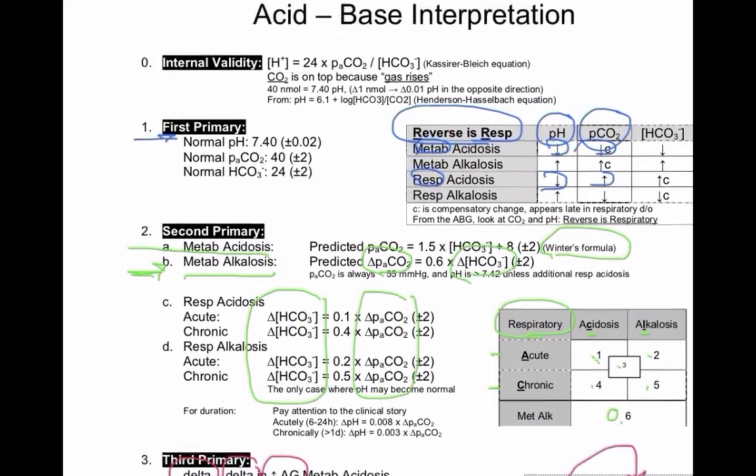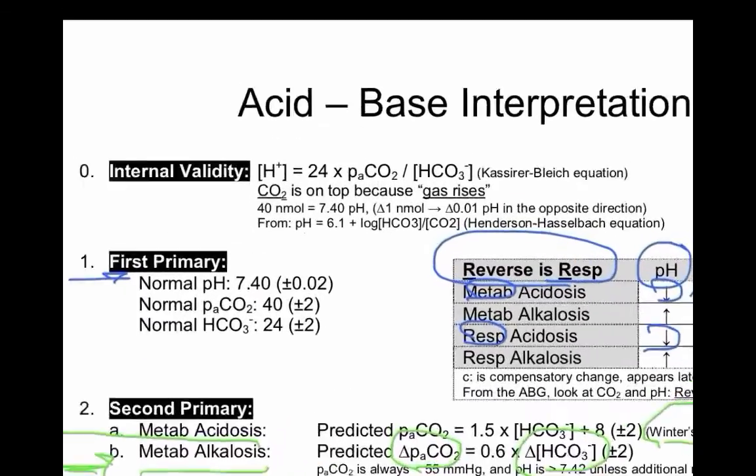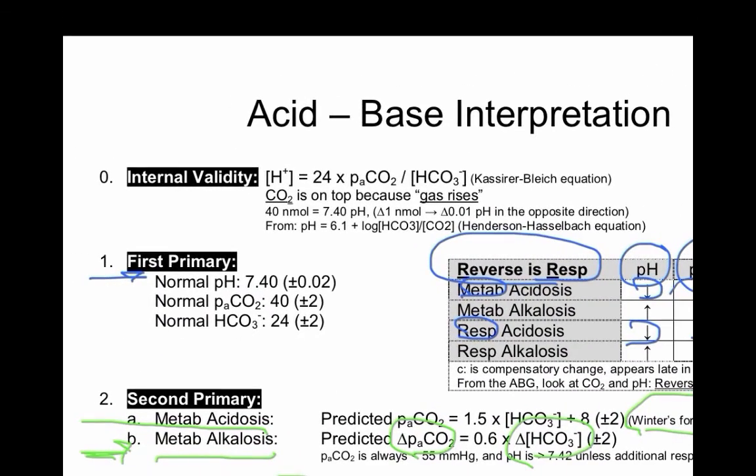After, or right before you start solving a problem, remember internal validity. This is something you will want to forget, but don't. It's very important because if the numbers don't work together, your analysis will all be wrong. I call it step zero because I wanted to keep the first primary as number one, second primary as number two, and so forth.